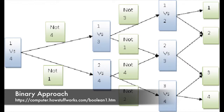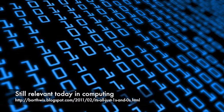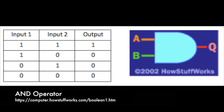Boolean algebra uses a binary approach, processing only two objects in question, known as truth values. These are denoted by ones and zeros to align with the values of yes and no, true and false, and on and off. There were three basic operations of Boolean algebra that Boole created that are still used in systems today: AND, OR, and NOT.